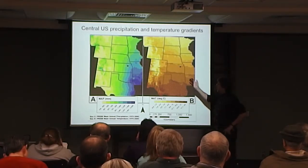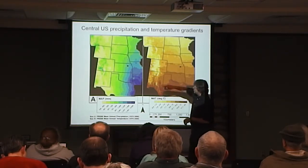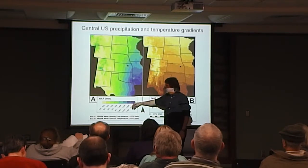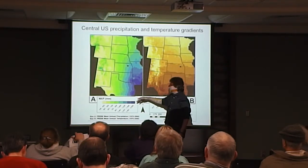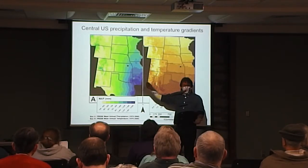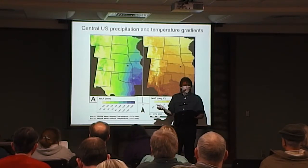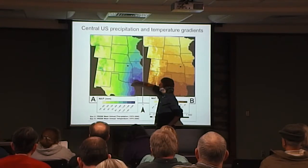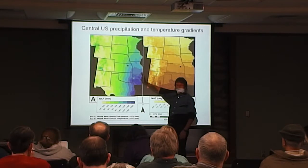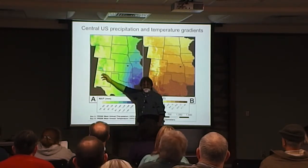So regional climate — here we are. I mentioned the rain shadow. This is the mean annual precipitation — mean annual rainfall in millimeters. We're around 32 inches of rainfall. Kansas' average is about 835 millimeters. But this is the rainfall gradient in the Great Plains, going from wettest in the east to driest in the rain shadow of the Rocky Mountains.